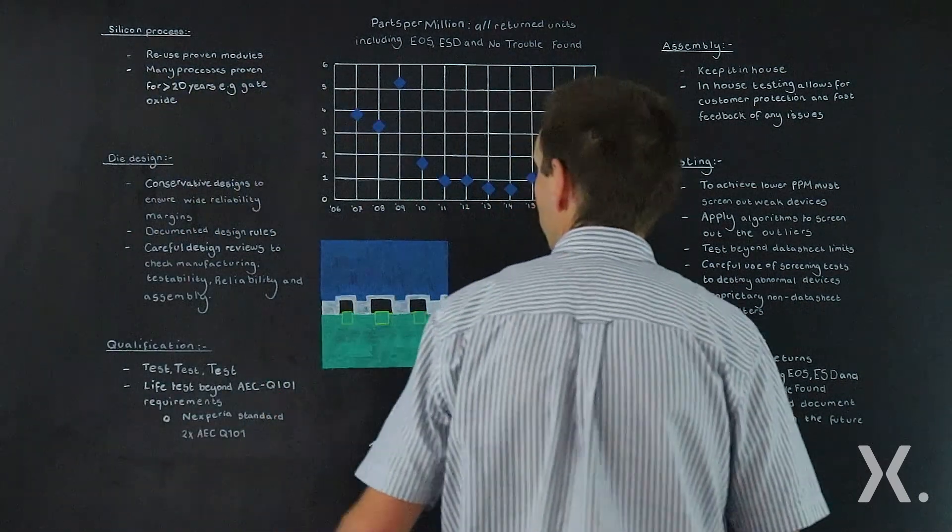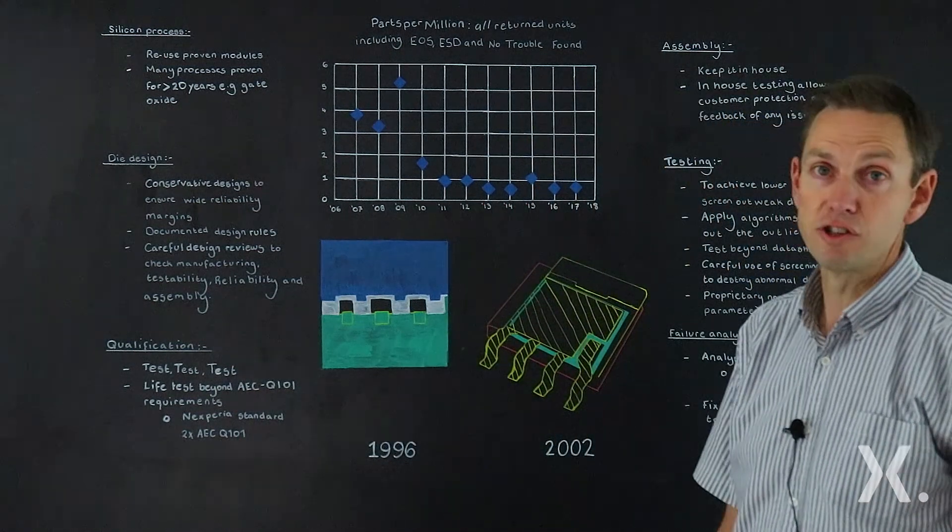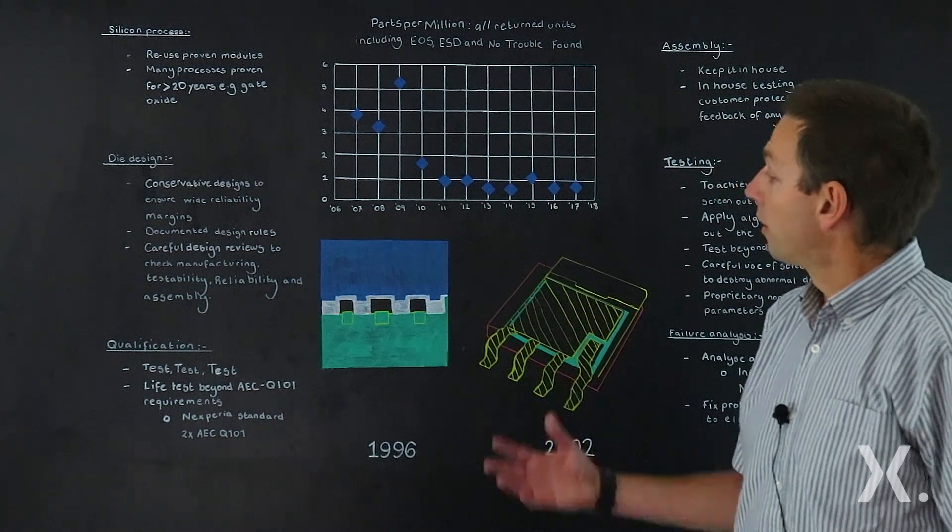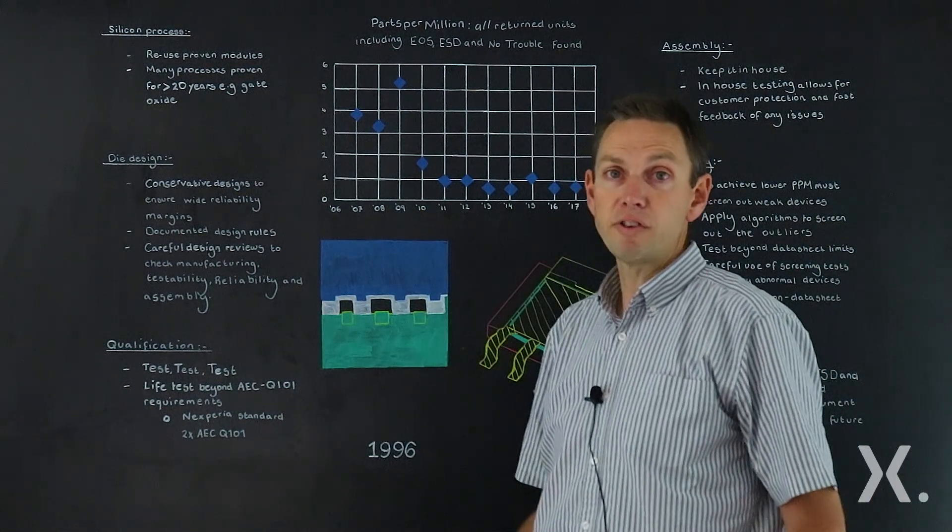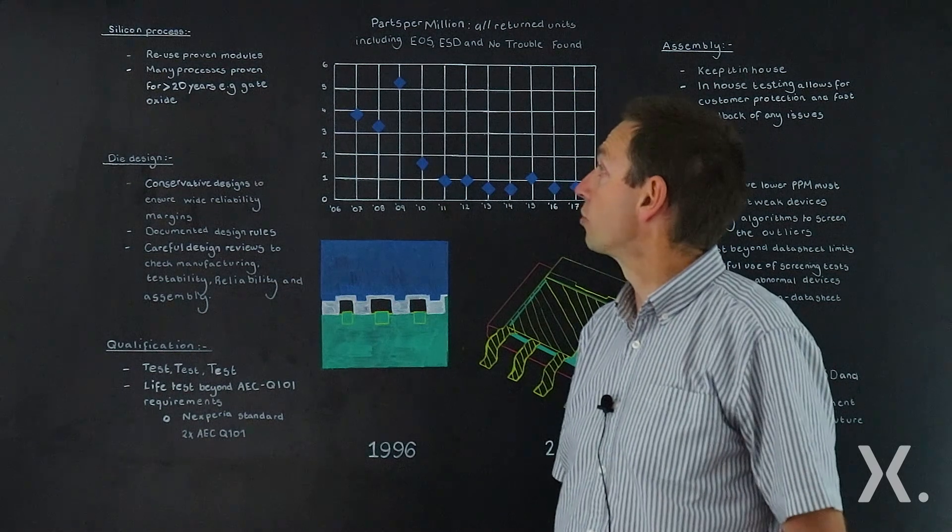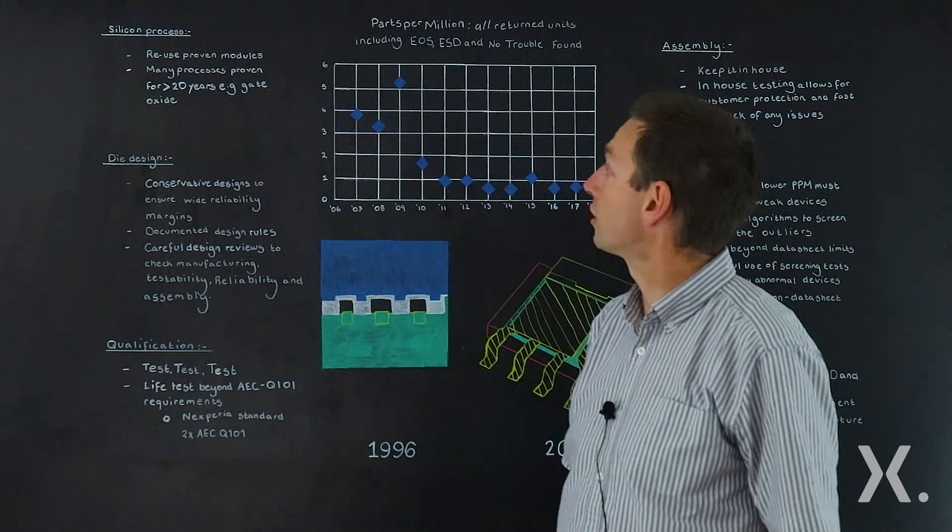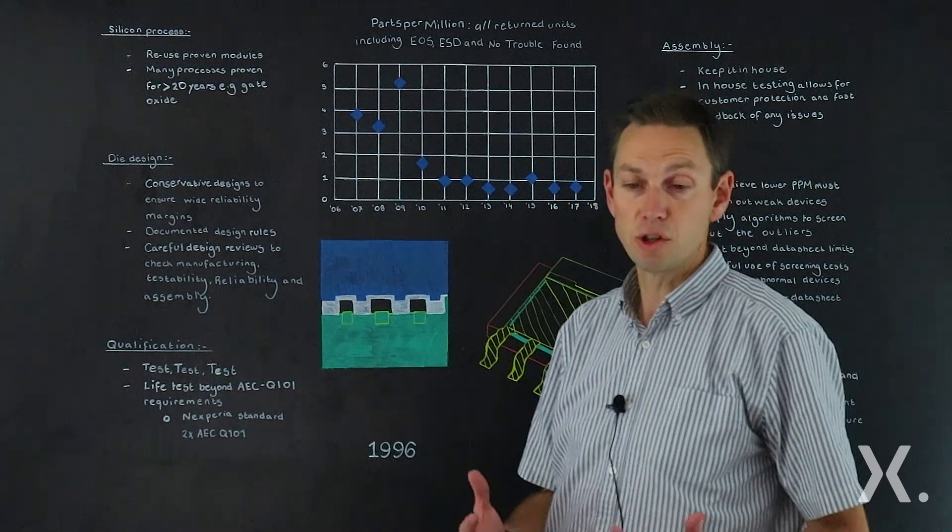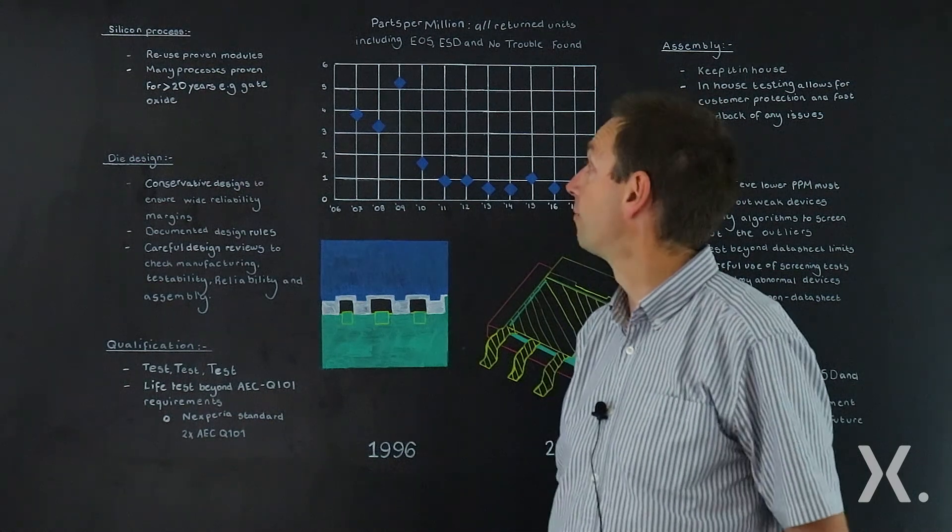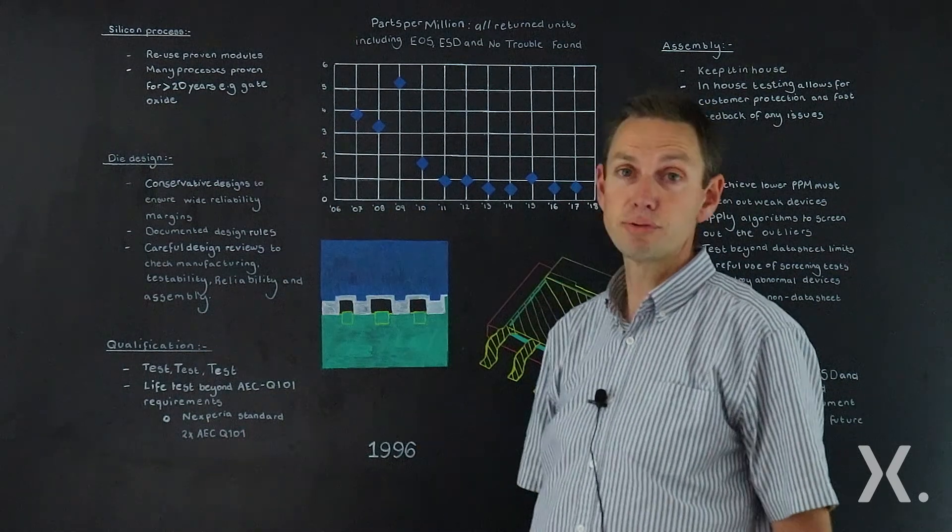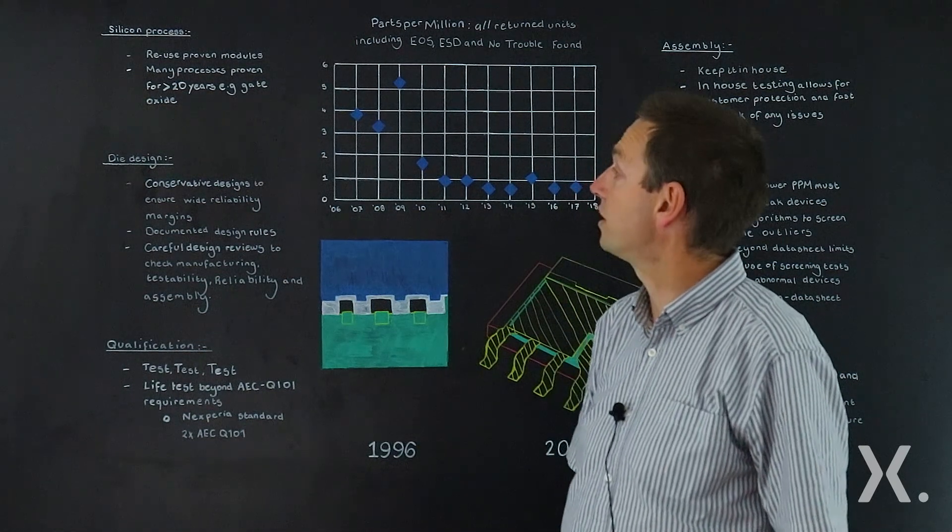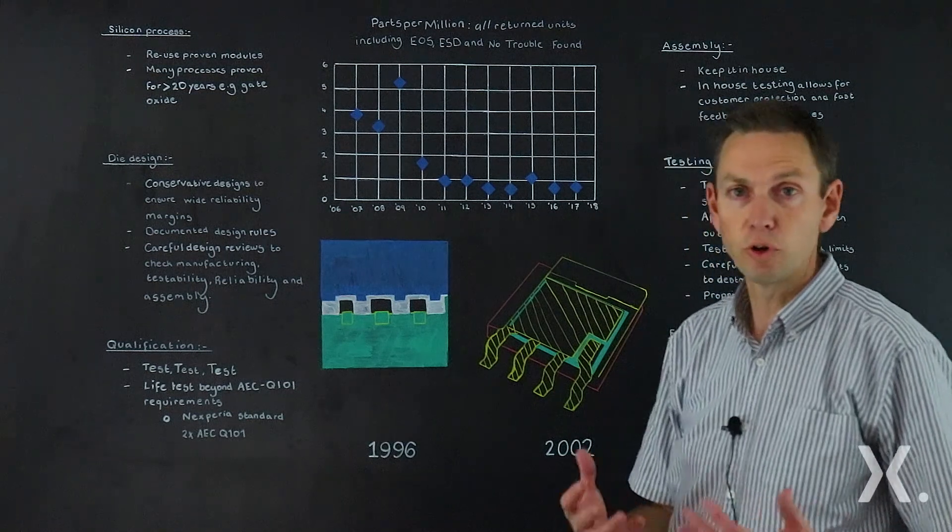So with all that experience, how do we reflect that back into our new generations of MOSFETs? There are several key areas. Let's first talk about silicon processing. It's very key that we reuse old technology, reuse proven modules, silicon process modules. Change is the one thing that can give reliability issues. So we keep on reusing as much as we can. For example, our gate oxide processes are basically the same processes we've been running for more than 20 years.